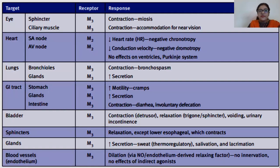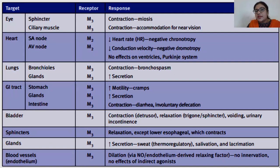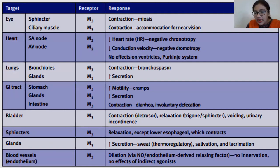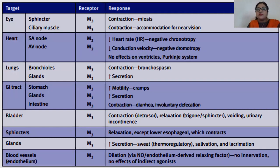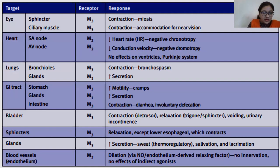Glands produce secretions — sweat, lacrimation, and salivation — in normal quantities under normal conditions. However, if a cholinomimetic drug is taken without a deficiency (such as dryness), the person would sweat more, salivate more, and lacrimate more. The drug is appropriately used when correcting conditions of dryness — no saliva, no tears, no sweat.